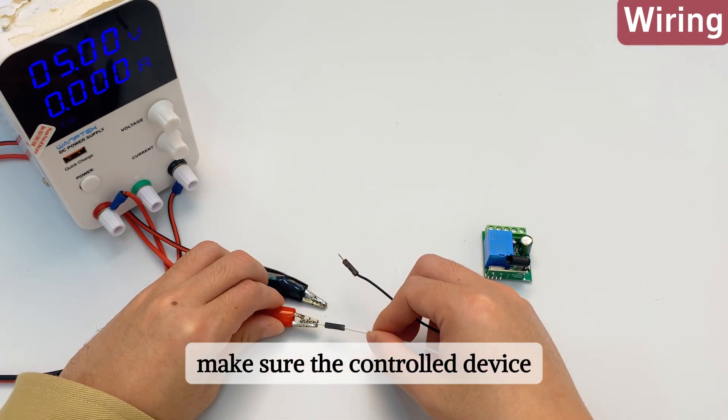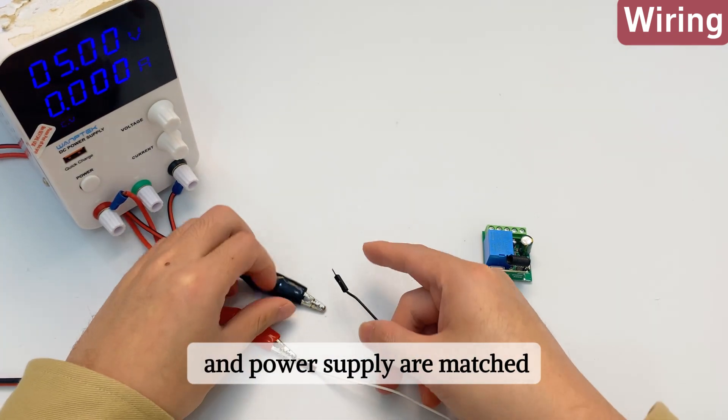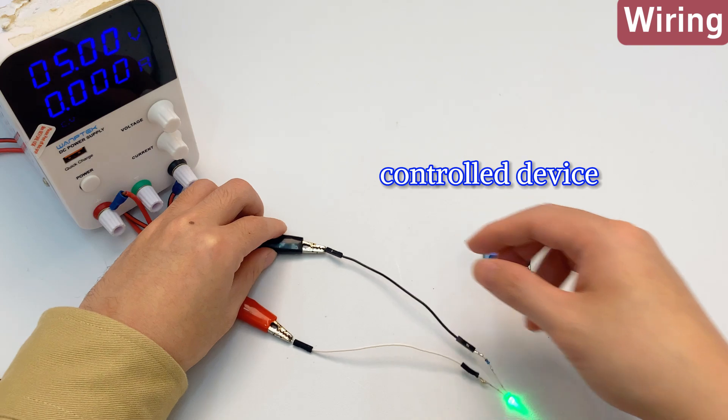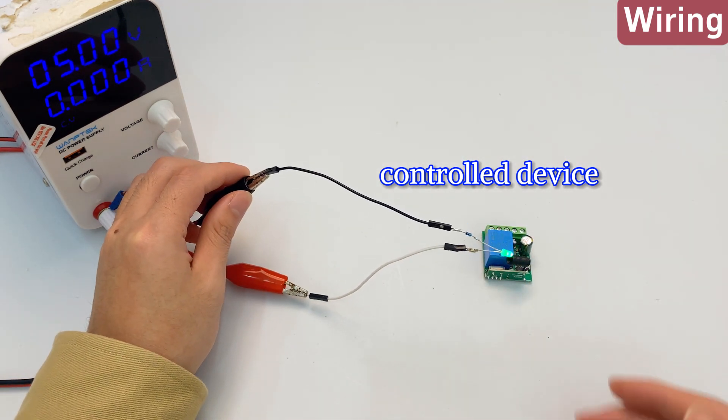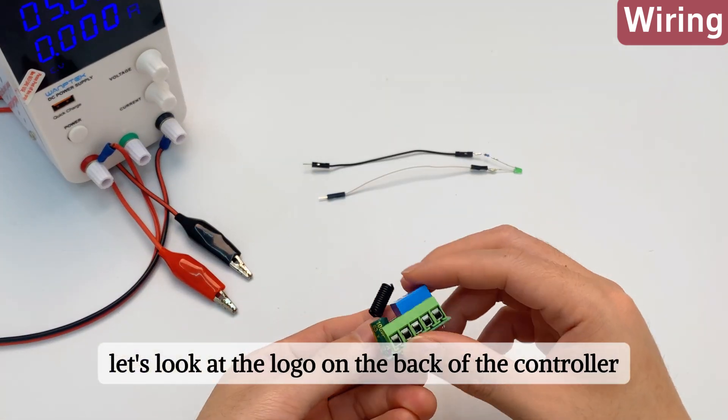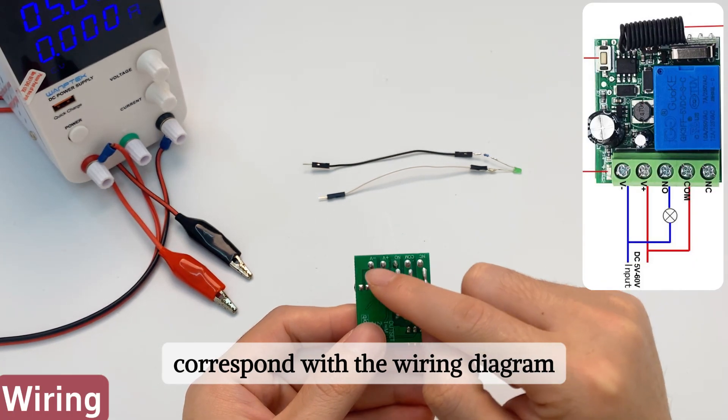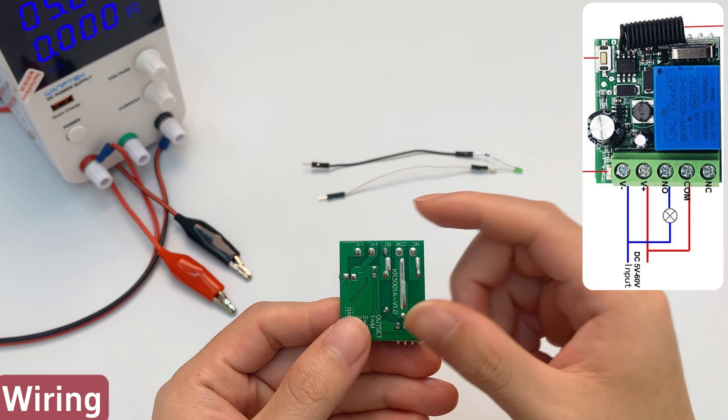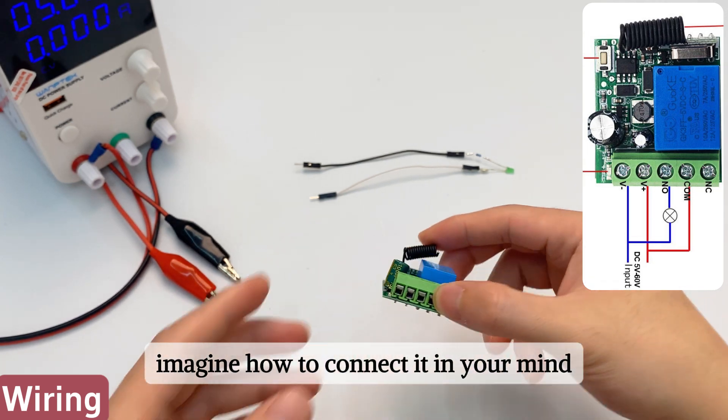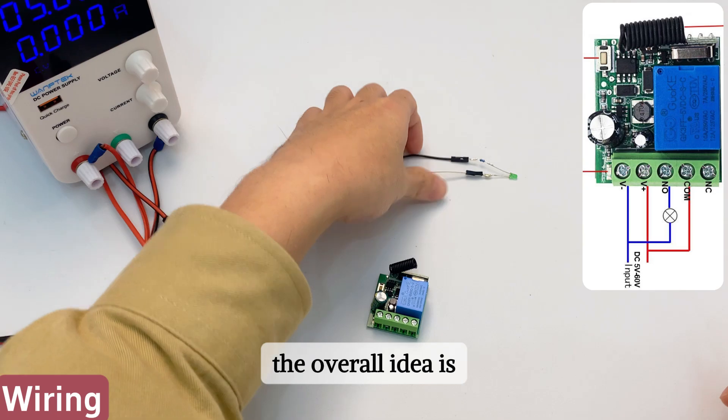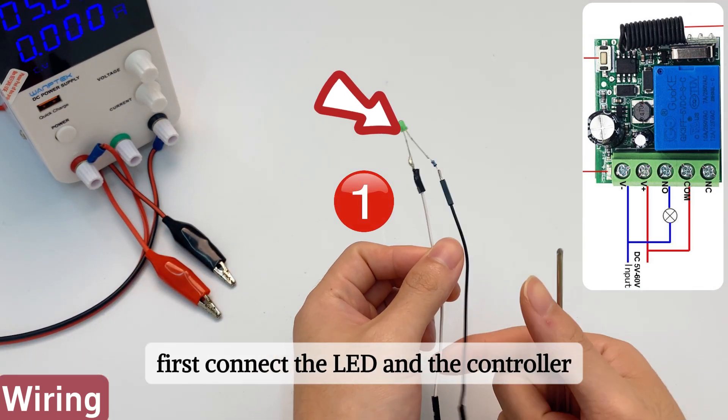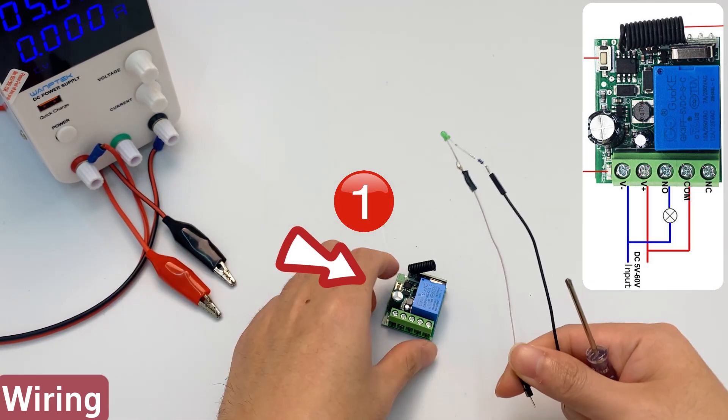Make sure the controlled device and power supply are matched. Let's look at the logo on the back of the controller and correspond with the wiring diagram. Imagine how to connect it in your mind. The overall idea is first connect the LED and the controller, then connect the power supply.